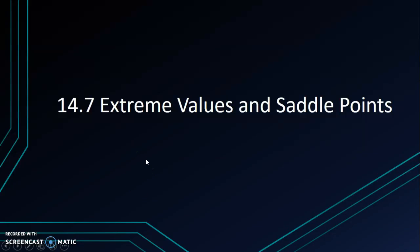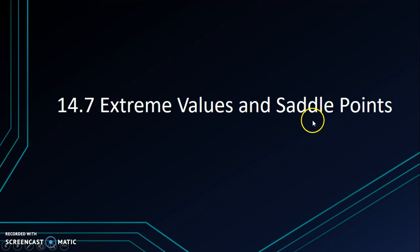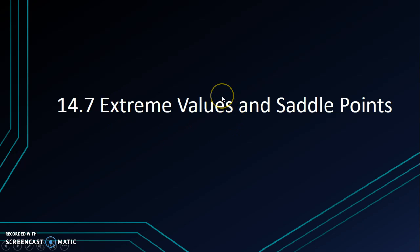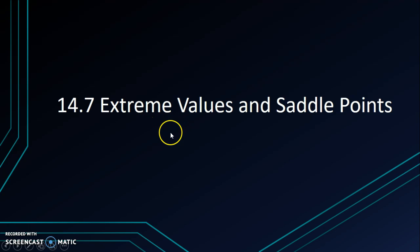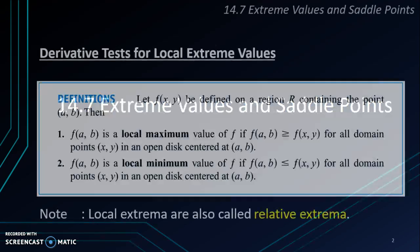In 14.7, we are going to learn to find the extreme values and also the saddle points. When we talk about extreme values, there are two types: the first type is local extreme values, and the second type is absolute extreme values. We will start from looking for local extreme values.